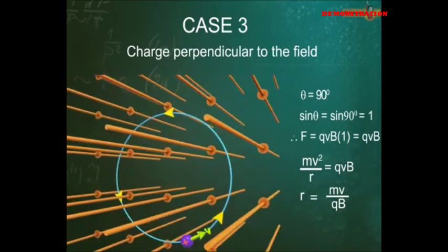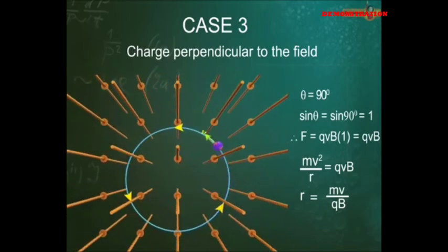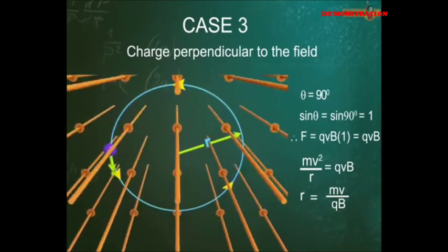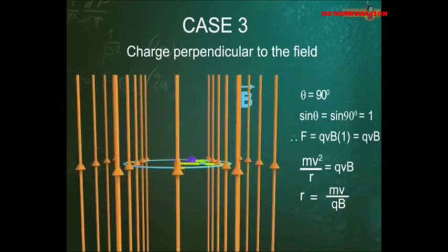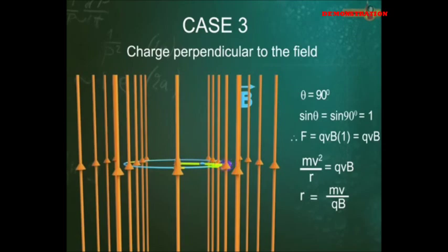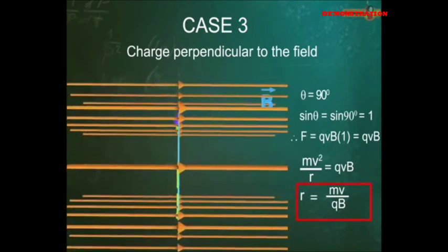Case 3: The charged particle moves perpendicular to the direction of magnetic field. It experiences a force in a direction perpendicular to the plane containing V and B. This force provides the centripetal force and makes the charged particle move along a circular path of radius r equal to mv by qb.